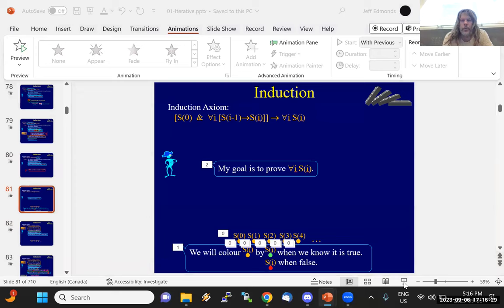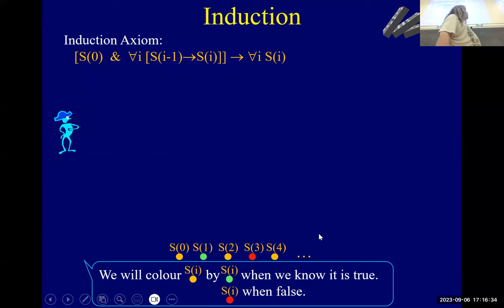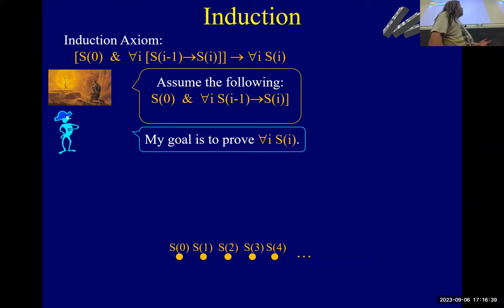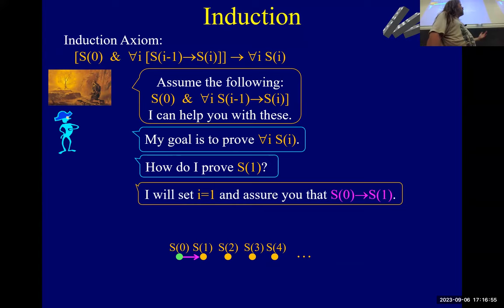All right, we're going to color them. We're going to color them green when we know they're true, right? So what, our goal is to prove that they're all green, right? And what are we doing here? Well, first the guy that the Google light proves that S is one is true or S is zero is true. Somehow we get S is zero is true.